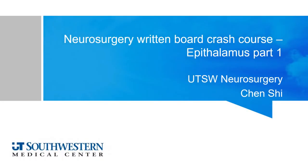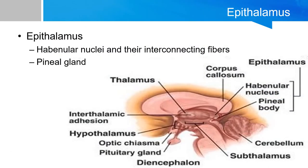Hello and welcome to Neurosurgery Written Board Crash Course. Today we're going to talk about epithalamus — this is part one of two videos. My name is Chen. There are a few structures named according to their location relative to the thalamus. The thalamus is very central, and immediately below it is the hypothalamus. Dorsal to it, we have a series of structures including the pineal gland and the habenular nucleus, both of which comprise the epithalamus.